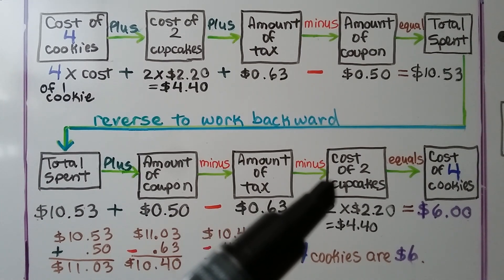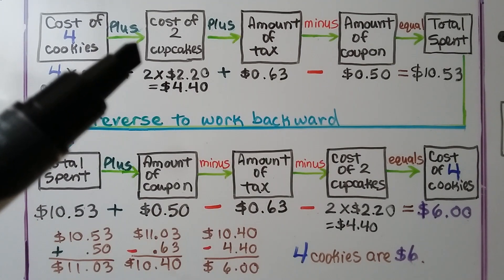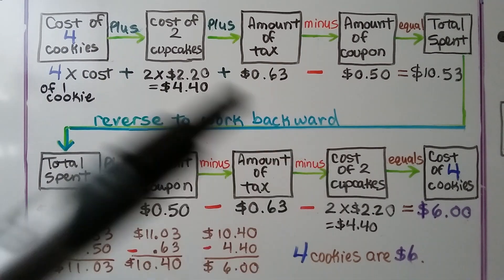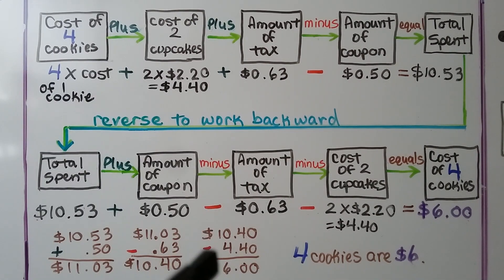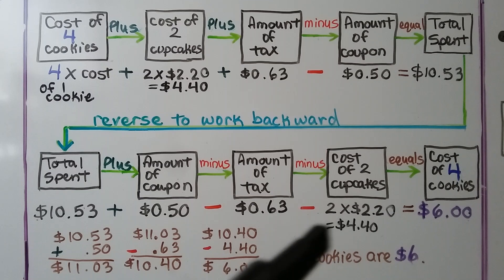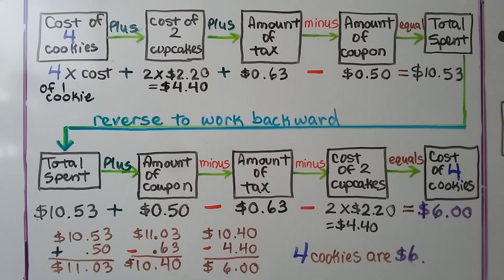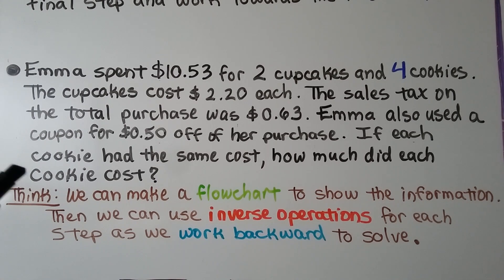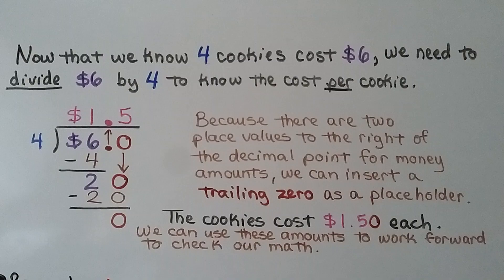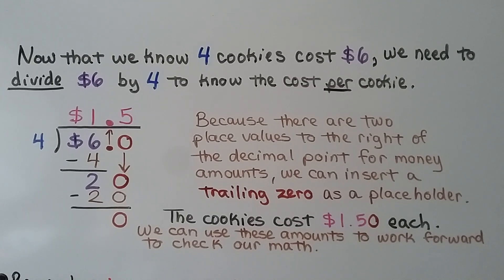We subtract the cost of the two cupcakes because we added them going forward, and subtraction is the inverse of addition. $10.40 minus $4.40 for the two cupcakes equals $6.00. That means the four cookies cost $6.00 total, but we're not quite done. The problem asks how much each cookie cost, and now that we know four cookies cost $6.00, we need to divide $6.00 by 4.